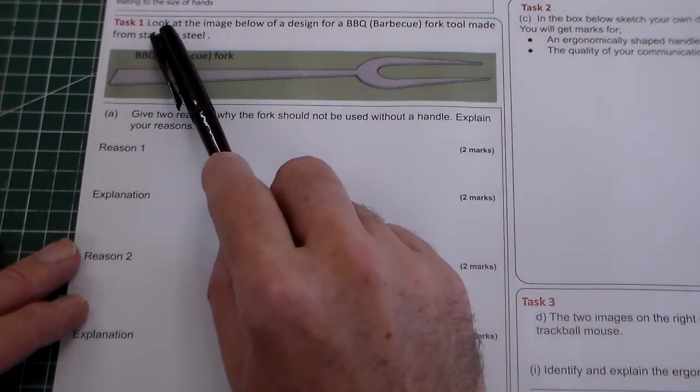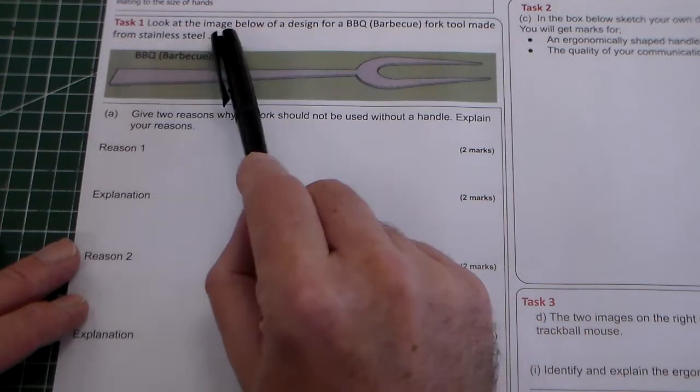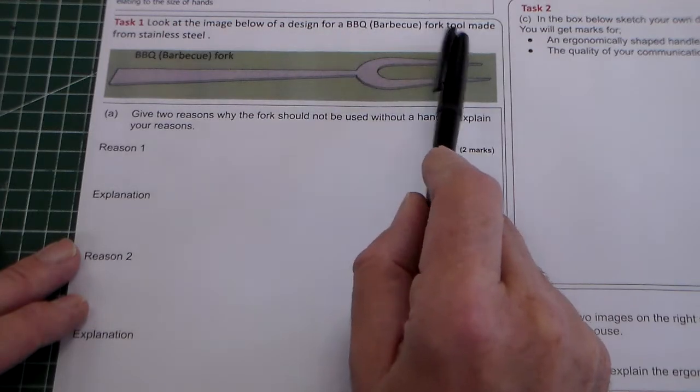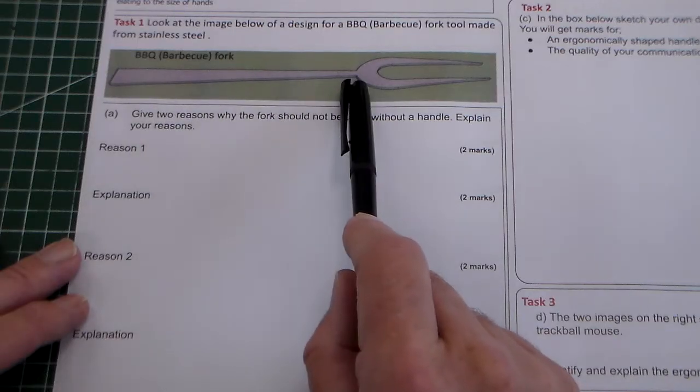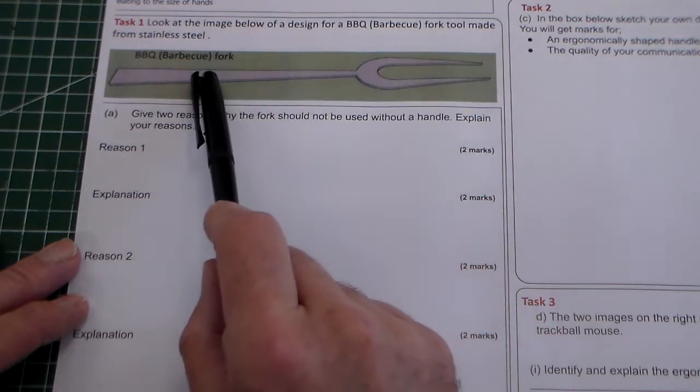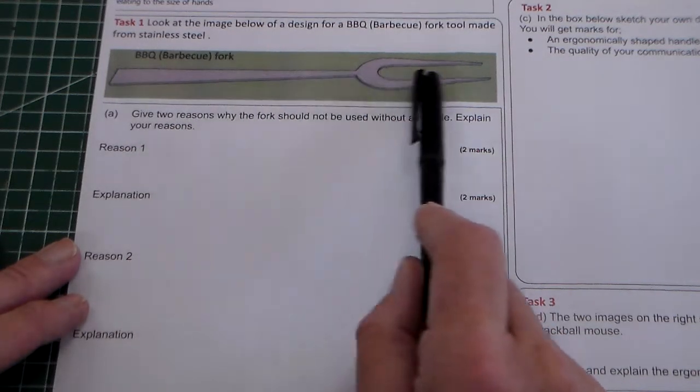So we've got question one: look at the image below of a design for a barbecue fork or barbecue tool made from stainless steel. We've got here this image of a barbecue tool, just a plain piece there.